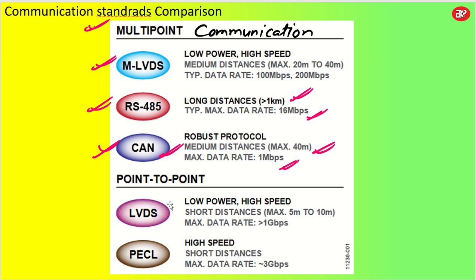If you talk about point-to-point, we have LVDS and PECL — that is positive emitter coupled logic. LVDS works over 5 to 10 meters and the data rate is very, very high at 1 Gbps. For positive emitter coupled logic, we have an even higher data rate of up to 3 Gbps, but it works over a very short distance.